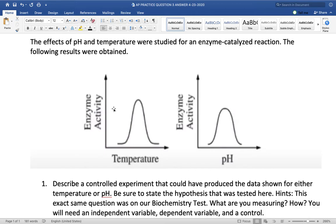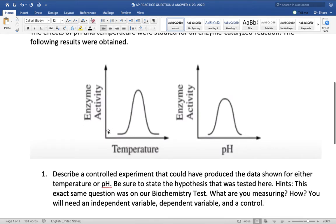You'll need to state the independent, dependent variables and the control. So, the graphs actually tell you a lot of those answers. Remember, independent variables are always on the x-axis and dependent variables are always on the y-axis. And then the control is not given here, but you can certainly come up with at least one control, maybe two controls.